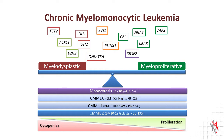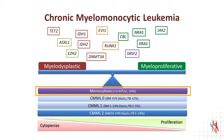The World Health Organization, or WHO, classification of 2017 has retained most of the major diagnostic criteria of CMML, which includes an MDS-MPN with monocytosis exceeding 1 million monocytes per microliter and 10% of the white blood count.